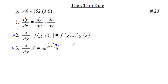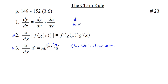What this tells us is the chain rule is always active. We may not have noticed it because we've been working with non-composite functions. For example, d/dx of x² gives 2x times the derivative of x, which is 1 — so we've been using the chain rule without realizing it.